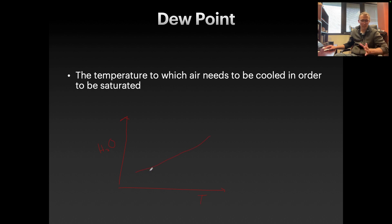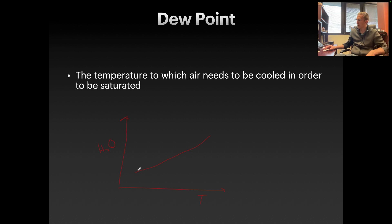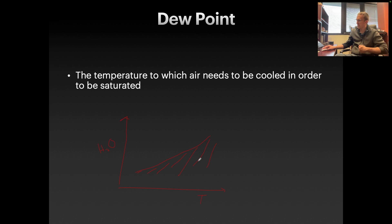The basic idea here is that at higher temperatures, the maximum amount of water vapor that the air can hold is going to be higher. And at lower temperatures, the maximum amount of water vapor the air can hold will be lower. So we'll be in this vicinity where there can be less water vapor in the air than the maximum it can hold, but it can never be over that.